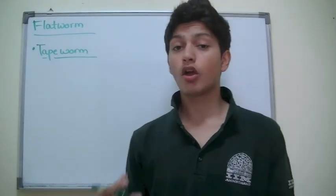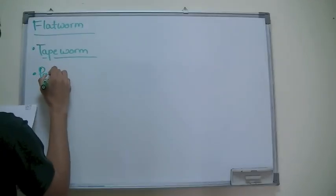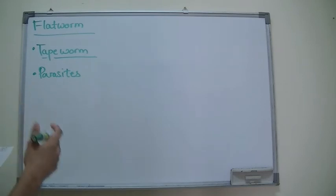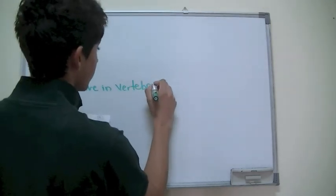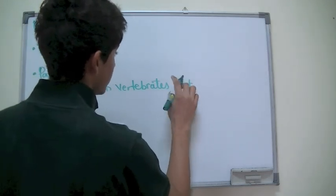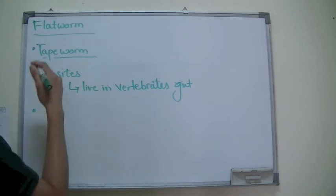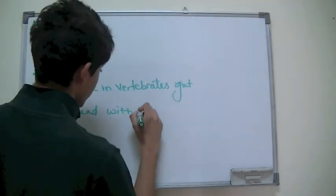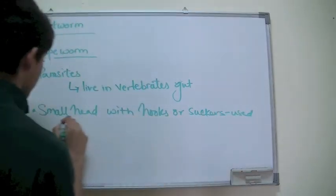Here we come to the third category of flatworm: the tapeworm. Like flukes, tapeworms are parasitic animals. They live in vertebrate guts. This particular type of flatworm — the tapeworm — has a small head with hooks or suckers used to attach to the host. And like all flatworms, tapeworms lack a gut.